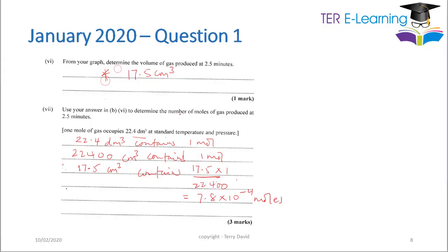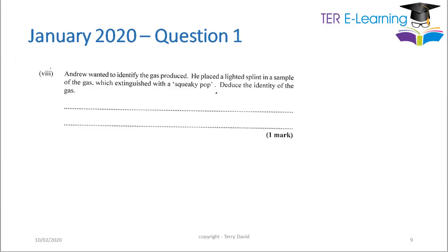Andrew placed a lighted splint into a sample of gas which extinguished with a squeaky pop. You all need to know your tests for gases: a squeaky pop confirms the presence of hydrogen gas. This confirms what we indicated at the beginning — hydrogen gas is the gas being produced in this reaction.